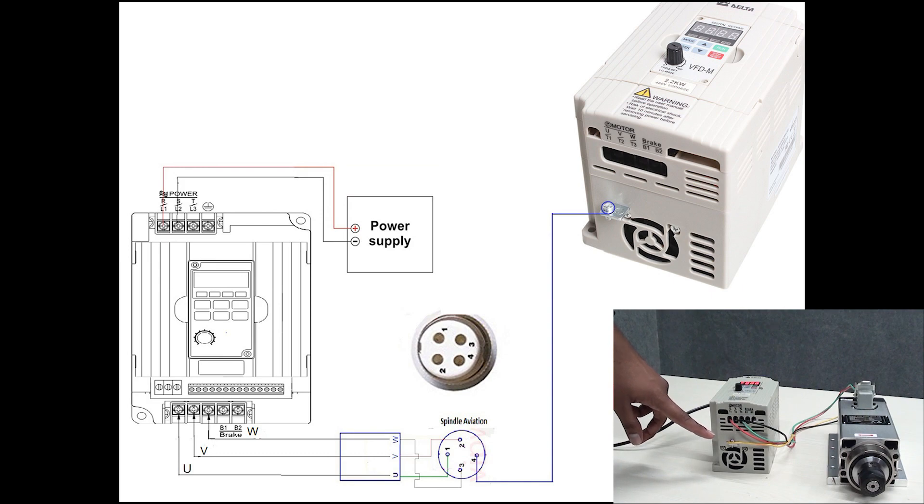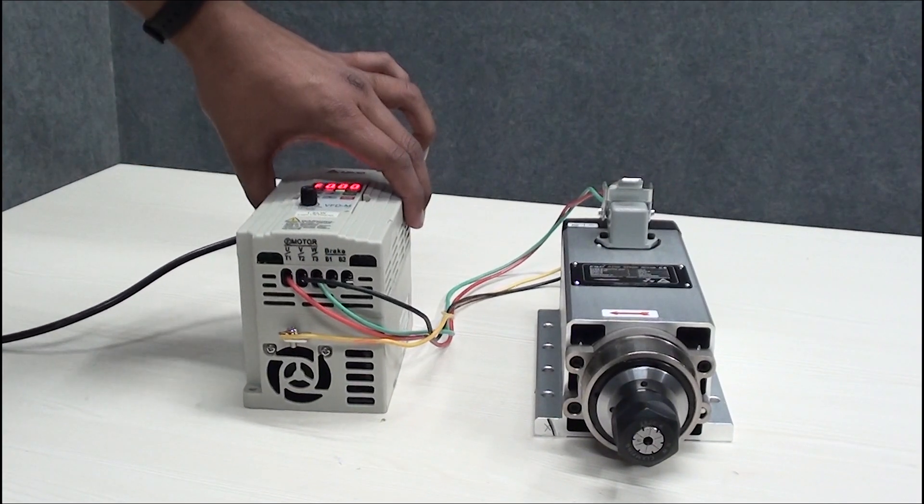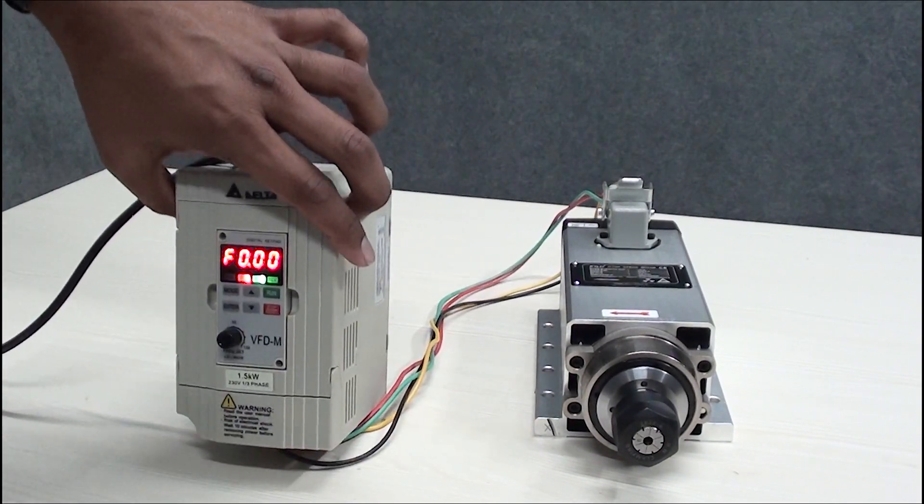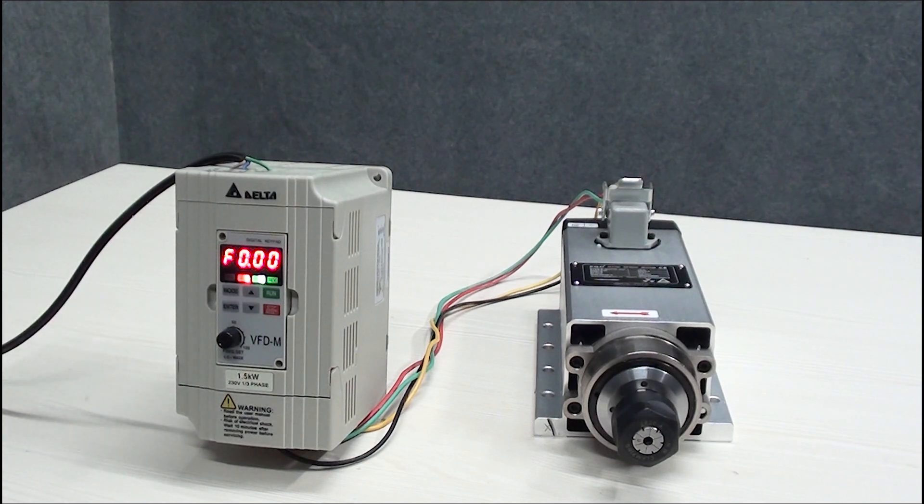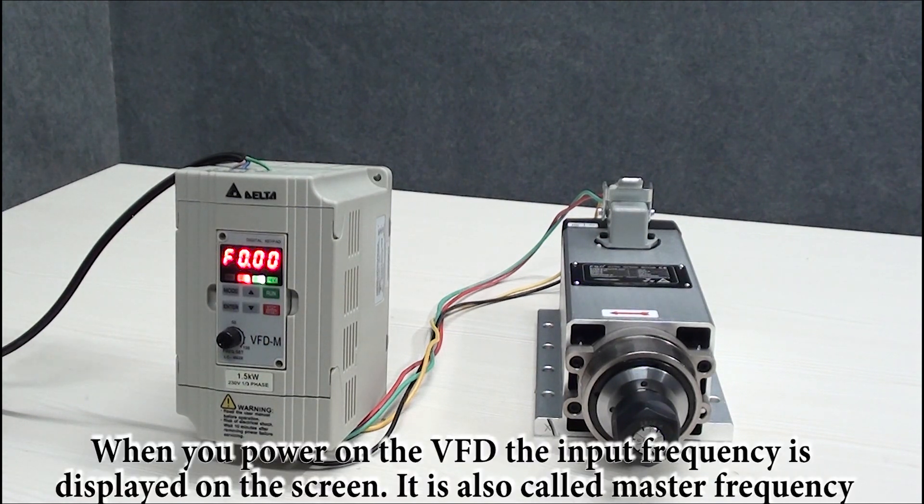Now VFD is of two types: single phase and three phase. We are using single phase VFD. In single phase you have to give power supply of 230 volts, and in three phase you have to give power supply of 460 volts AC. As we power on the VFD, the master frequency displays on this VFD. It is currently in stop mode.